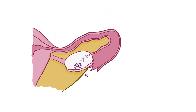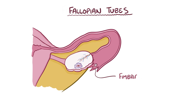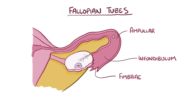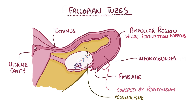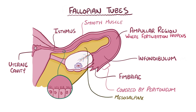After ovulation, the secondary oocyte makes a very quick journey through the peritoneal space and lands in the fallopian tube. The first part is the fimbriae, which are the finger-like projections that surround the ovary and guide the secondary oocyte into the fallopian tube. Next is the infundibulum, then the ampulla region, which is where fertilisation typically happens between the secondary oocyte and the sperm. Finally, the isthmus region opens into the uterine cavity. On the outside, the fallopian tubes are covered by peritoneum and supported by the mesosalpinx, which is part of the broad ligament. On the inside, the fallopian tubes have smooth muscle with an inner lining of ciliated cells that slowly sweep the secondary oocyte or zygote towards the uterus.